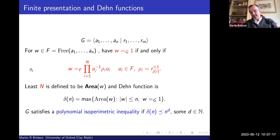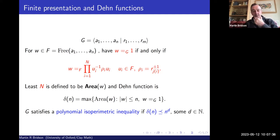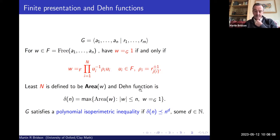Let me recall finite presentations and the Dehn function. The Dehn function measures the complexity of a direct attack on the word problem. Given a group G by a finite presentation, a word in the generators represents the identity if and only if it can be expressed in the free group as a product of conjugates of defining relations. The number of factors in this product is called the area of the word.